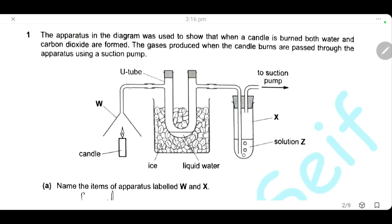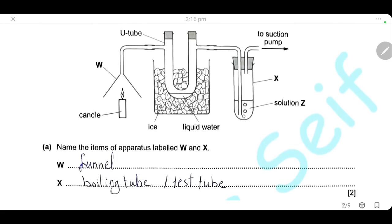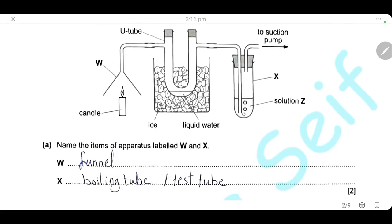At the first part, the gas passes through this U-tube placed in an ice-speaker. Then it passes through solution Z. First, name the items labeled W and X. W is a funnel and X is a boiling tube or a test tube.